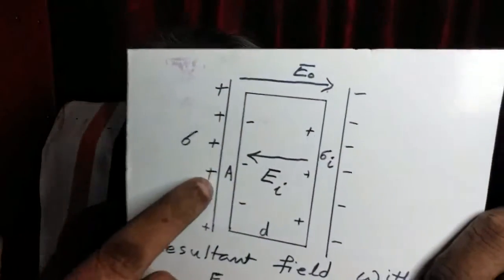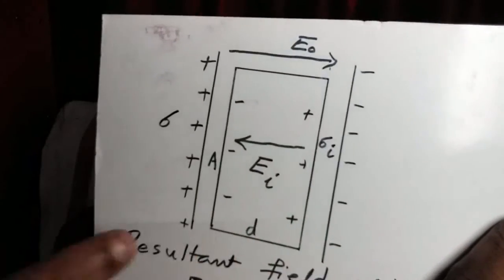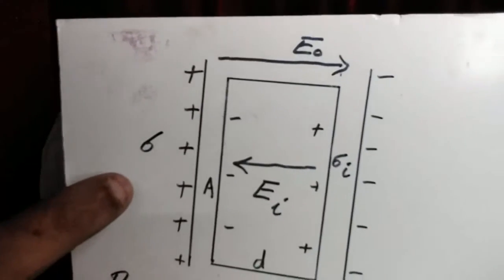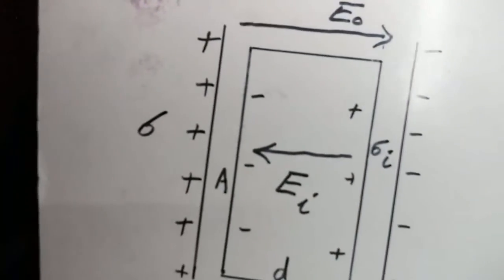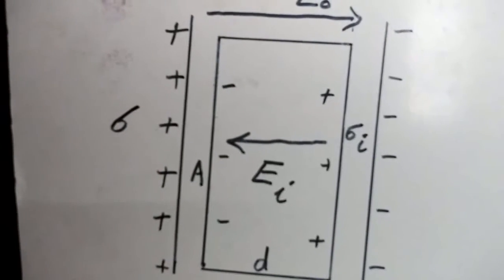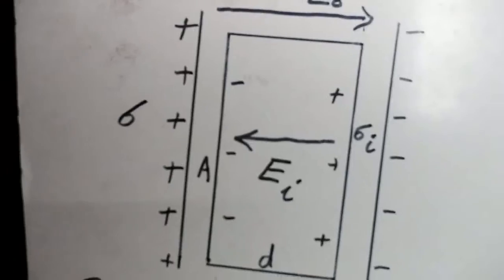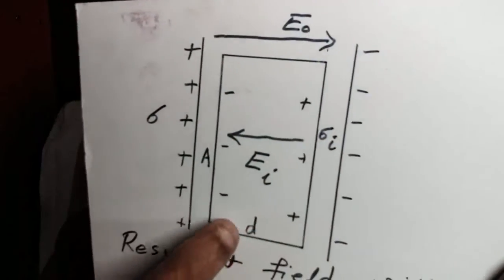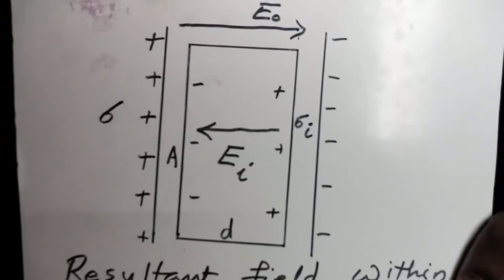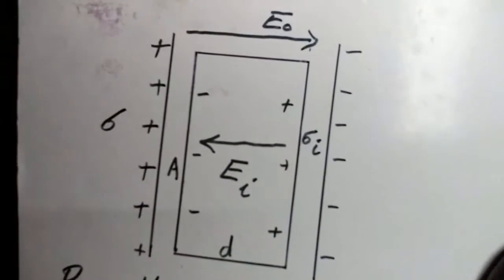Now see this figure. These are two parallel metal plates charged with equal and opposite electric charges. The surface density of charge on each plate has a magnitude sigma. Sigma is called bound charge density. Inside, within the metal plates, we introduce a dielectric material in the form of a rectangular slab.